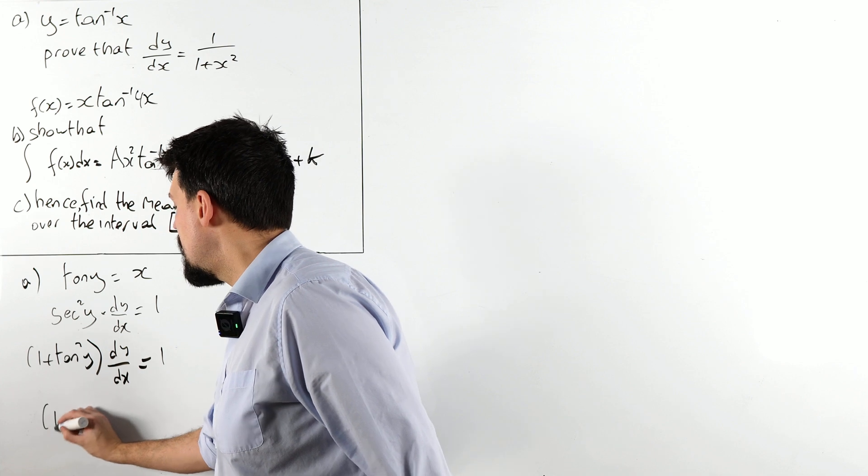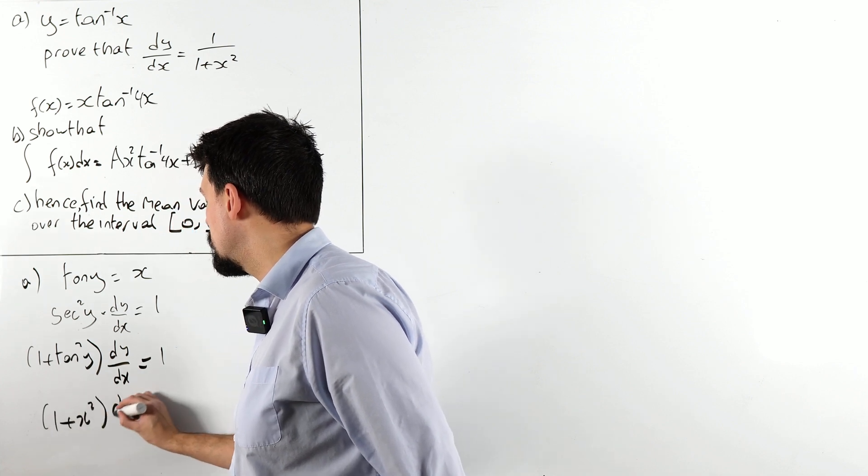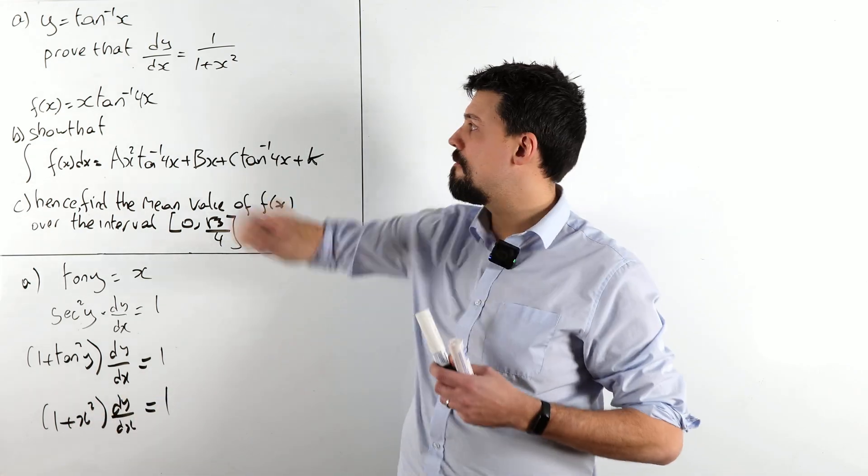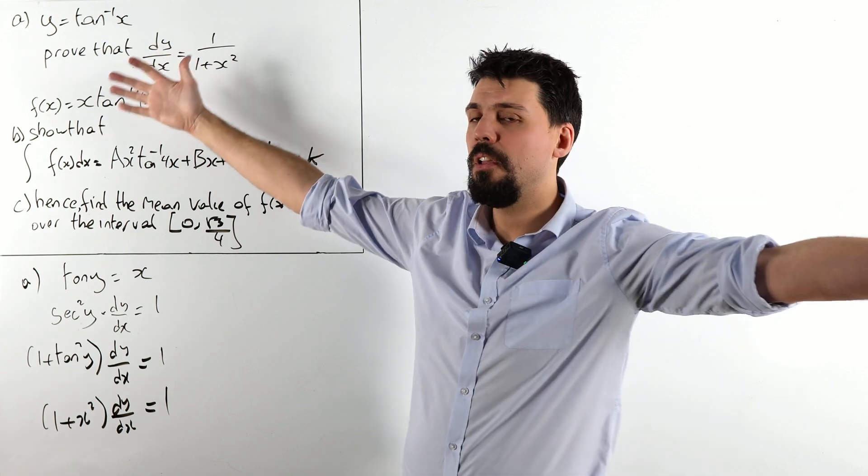We know that sec squared is 1 plus tan squared of y. Which is handy for me, because that is 1 plus x squared. Divide both sides by 1 plus x squared, we have our result. Jobs are good'un.